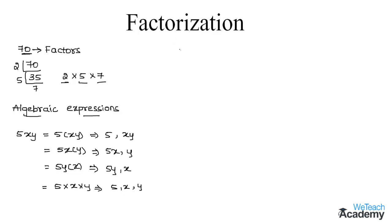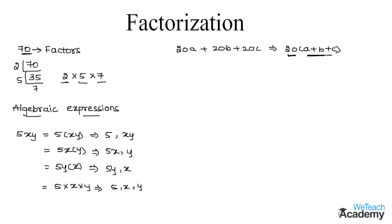Now let us write another algebraic expression: 20a + 20b + 20c. From this expression, by taking 20 as a common factor we can write it as 20(a + b + c). Here we observe that the irreducible factors are 20 and (a + b + c). The number 20 is called a numerical factor and (a + b + c) is called an algebraic factor.